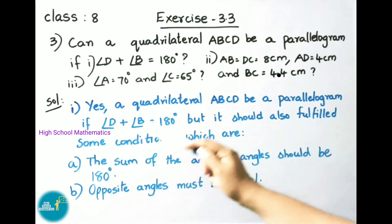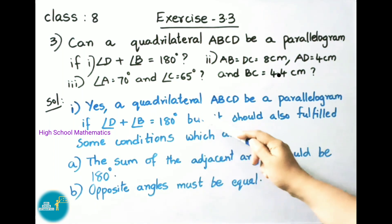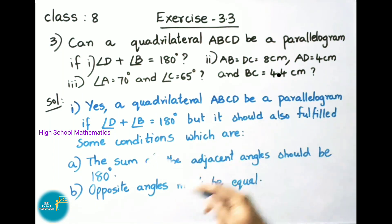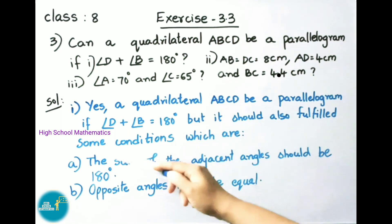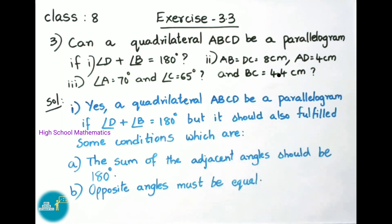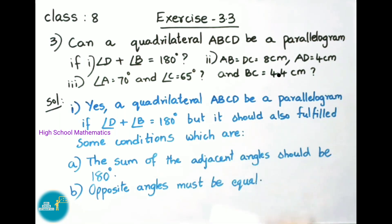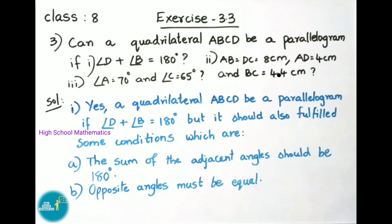For part (i): a quadrilateral ABCD can be a parallelogram if angle D plus angle B equals 180 degrees, but it must also satisfy additional conditions — the sum of adjacent angles should be 180 degrees, and the opposite angles must be equal.